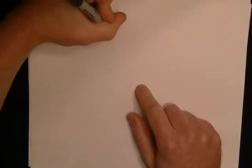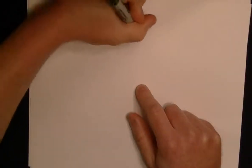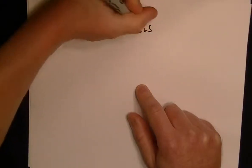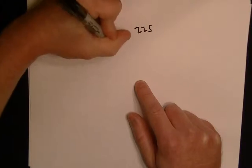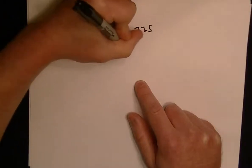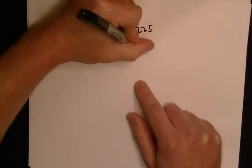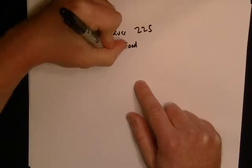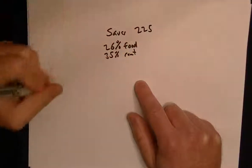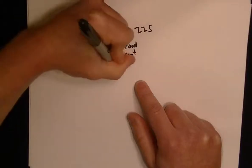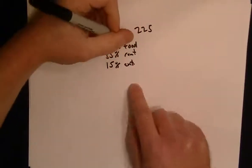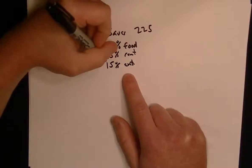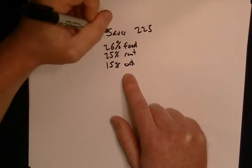Okay, we're told that Ted saves $225 a month, and we're also told that he spends 26% on food, 35% on rent, and 15% on entertainment. They say that he saves the rest, and then they want to know how much he gets paid.